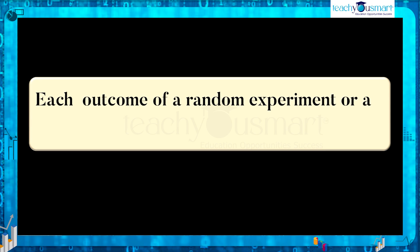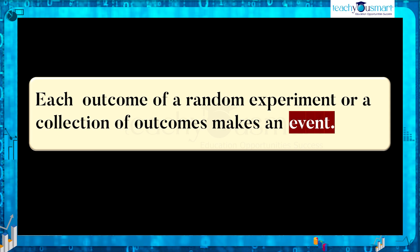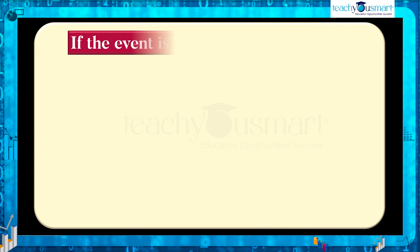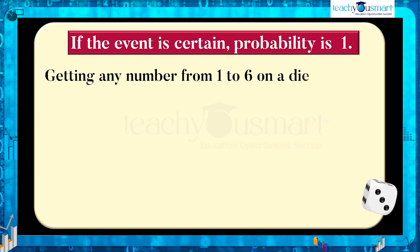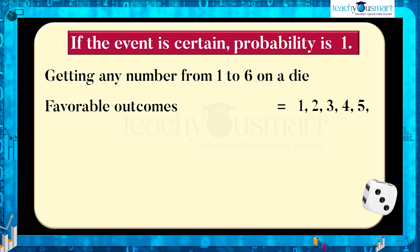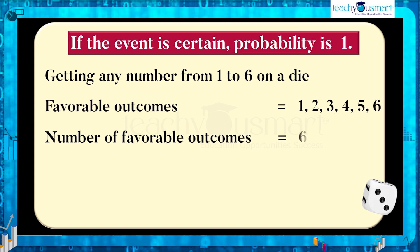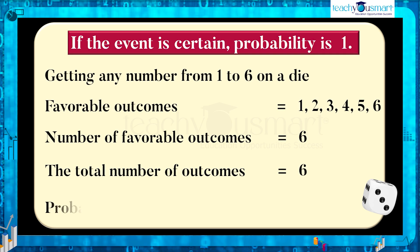This type of obtaining outcomes is called an event. Each outcome of a random experiment, or a collection of outcomes, makes an event. If the event is certain, the probability is one. For example, getting any number from one to six on a die — the favorable outcomes are numbers one, two, three, four, five, six, that is the number of favorable outcomes equals six and the total number of outcomes equals six. Therefore, the probability equals six by six equals one.